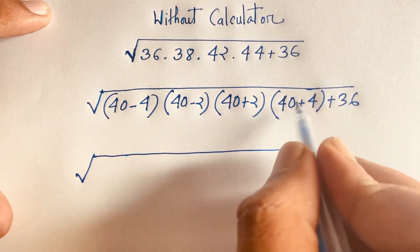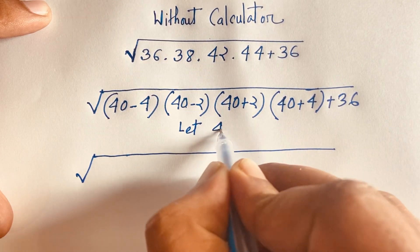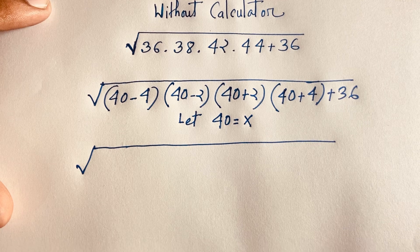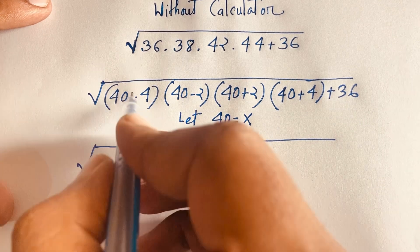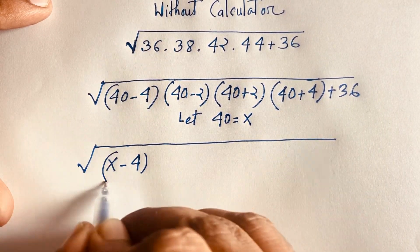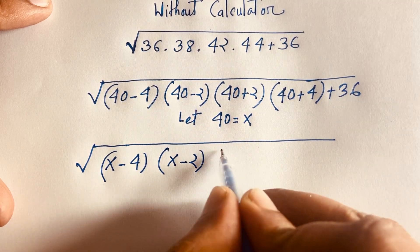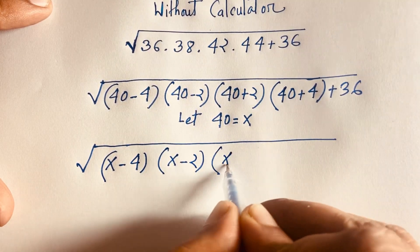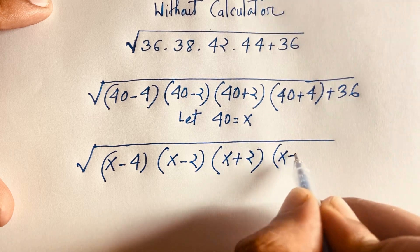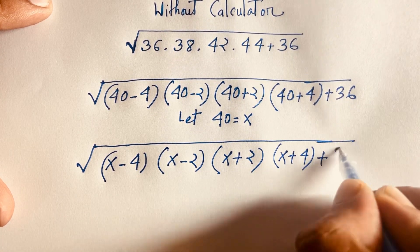Now since we have 40, 40, 40, 40, I let x equal 40. So the expression becomes the square root of (x minus 4) times (x minus 2) times (x plus 2) times (x plus 4), plus 36.